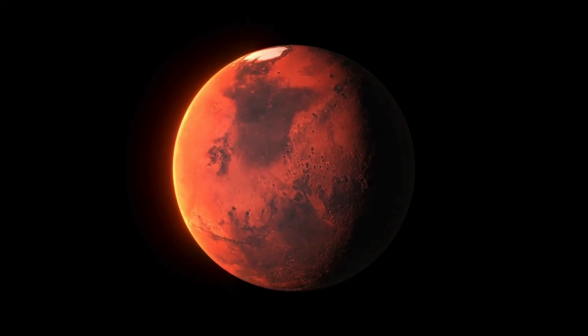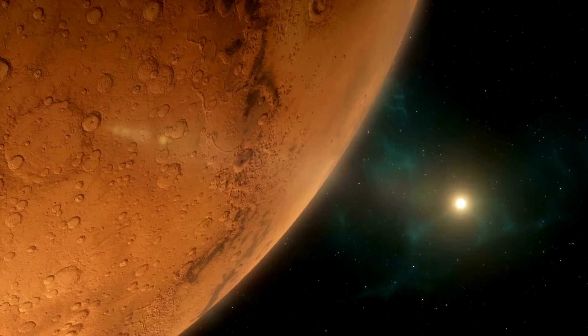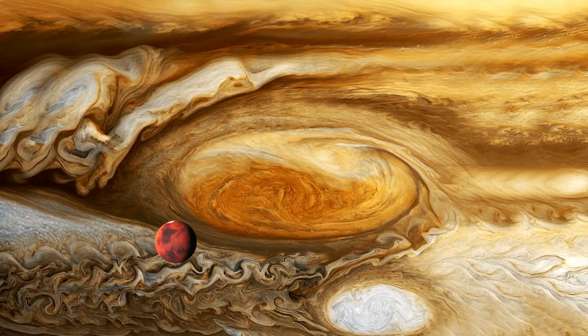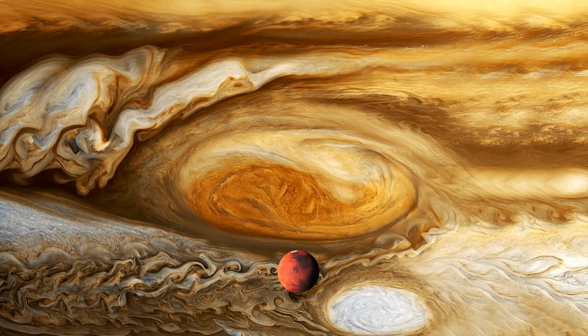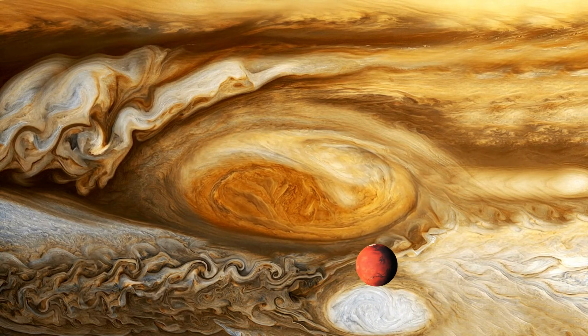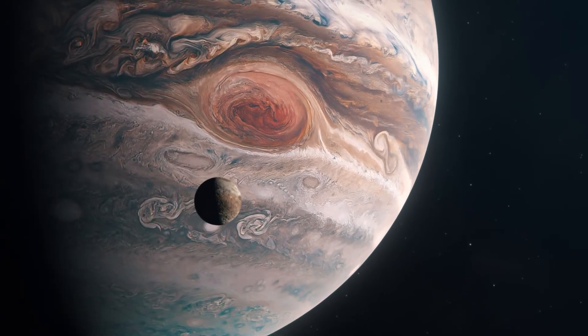Mars would not undergo any changes. However, if this planet moves too far from the Sun, it could end up being trapped by Jupiter's gravity. If this happens, Mars would become a moon of Jupiter and would become the largest moon of the gas giant planet, dethroning Ganymede, the current largest satellite of Jupiter and the largest in the entire solar system.